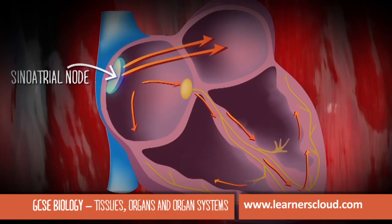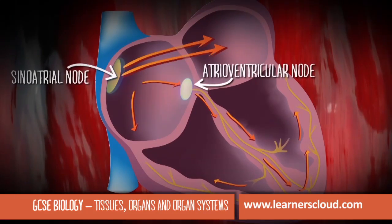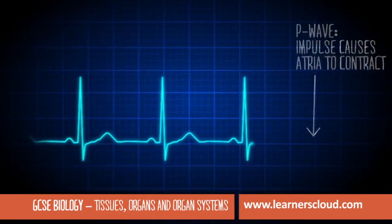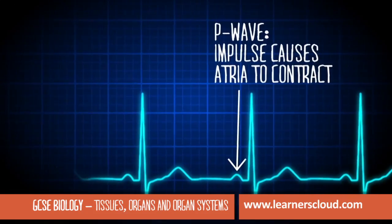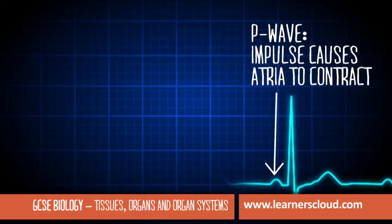The impulse then spreads to another cluster of cells called the AVN, or the atrioventricular node. This small impulse triggers the atria to contract.